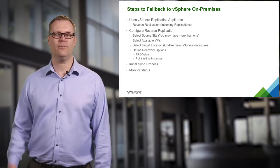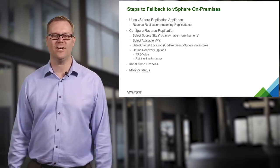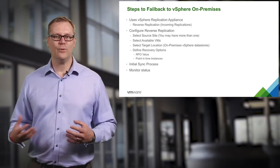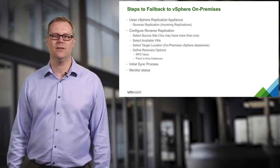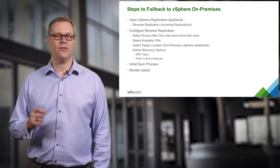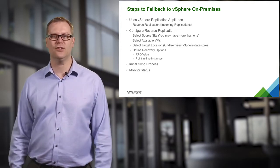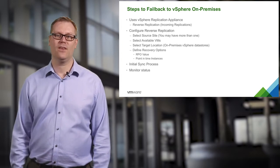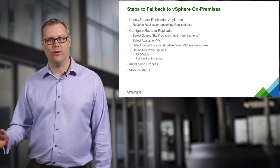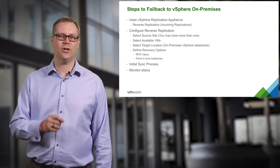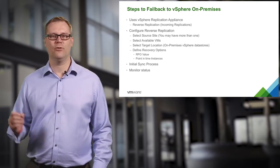We will go over how we configure failback, the options available to us, and the steps available once the virtual machine has been configured. Once we configure the virtual machine, we will look at how to monitor the replication status. You will notice that the steps to perform failback are very similar to configuring replication from vSphere to the cloud. You can configure your recovery point objectives, which are 15 minutes to 24 hours, and you can configure multi-point in time recovery. This gives us the same level of control as we see when replicating from on-premises.